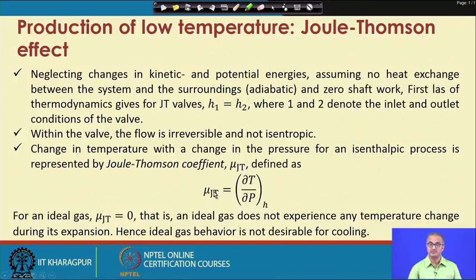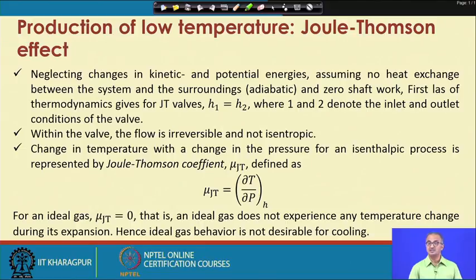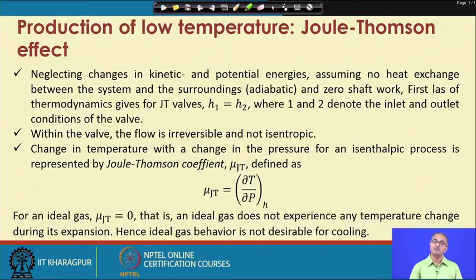For an ideal gas, the value of μ_JT equals zero, meaning we cannot change the temperature of the fluid by changing the pressure. Therefore, an ideal gas is not suitable to produce cooling or refrigeration via Joule-Thomson expansion. Fortunately, under cryogenic conditions — very low temperatures — all gases behave non-ideally, and that is why we can produce refrigeration using cryogenic gases.